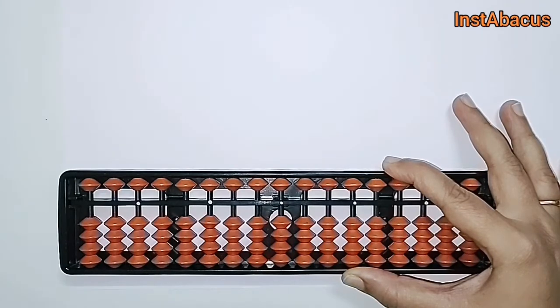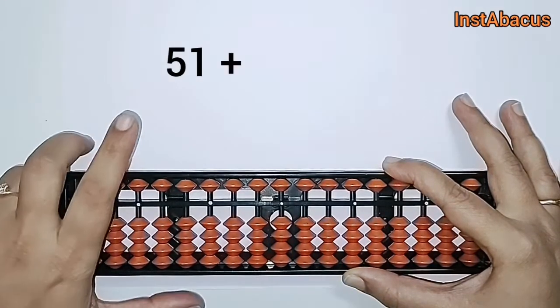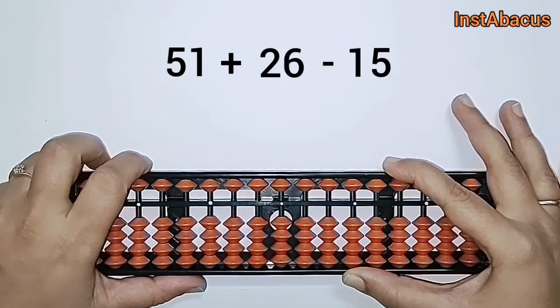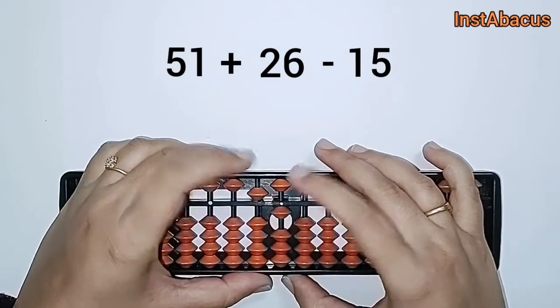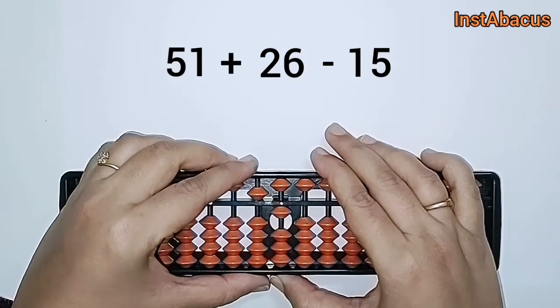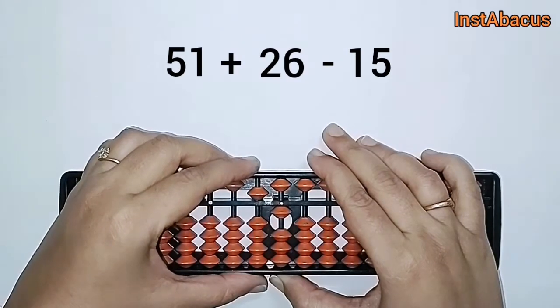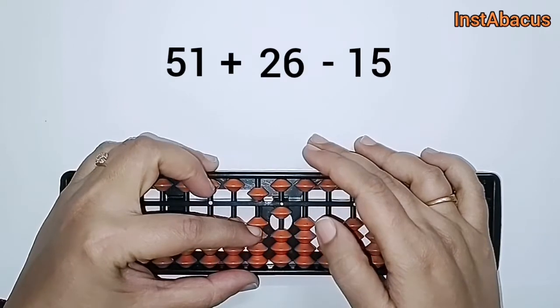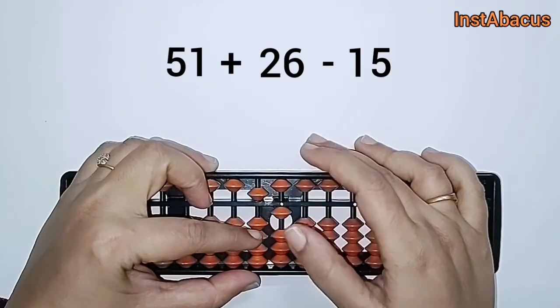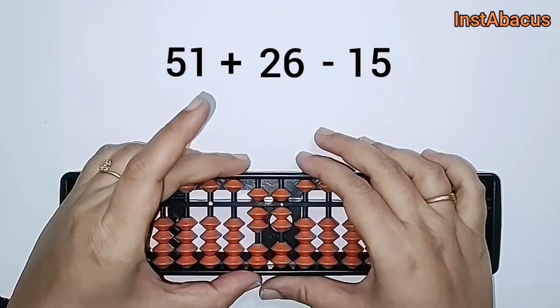Let's go ahead with the first one: 51 plus 26 minus 15. So, 51 here on our abacus. Now to this we are going to add 26. For adding 26, we will move these two earthly beads and this one heavenly and one earthly bead towards the answering bar.